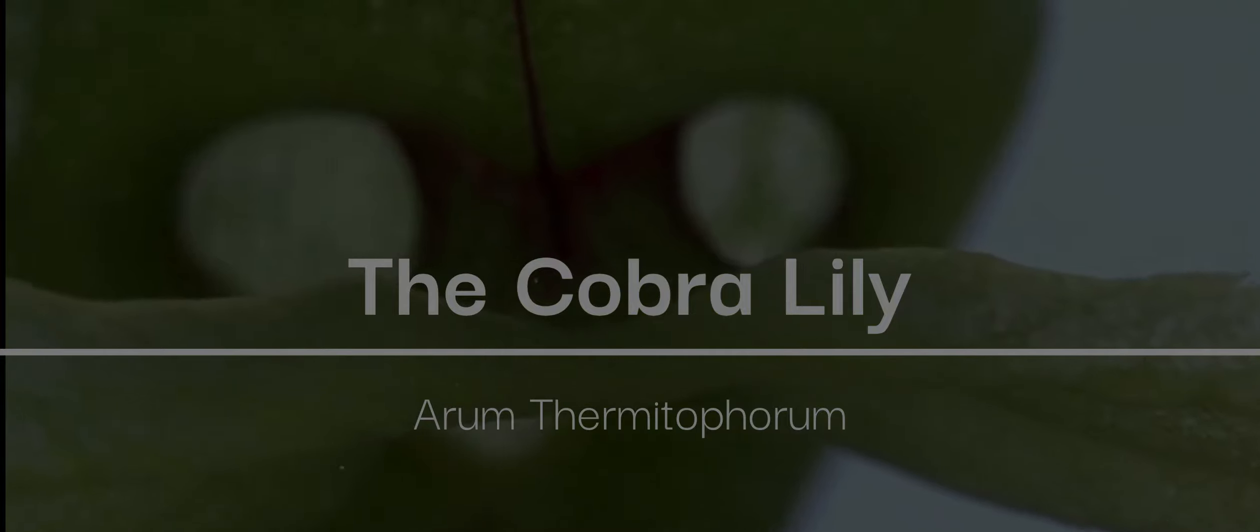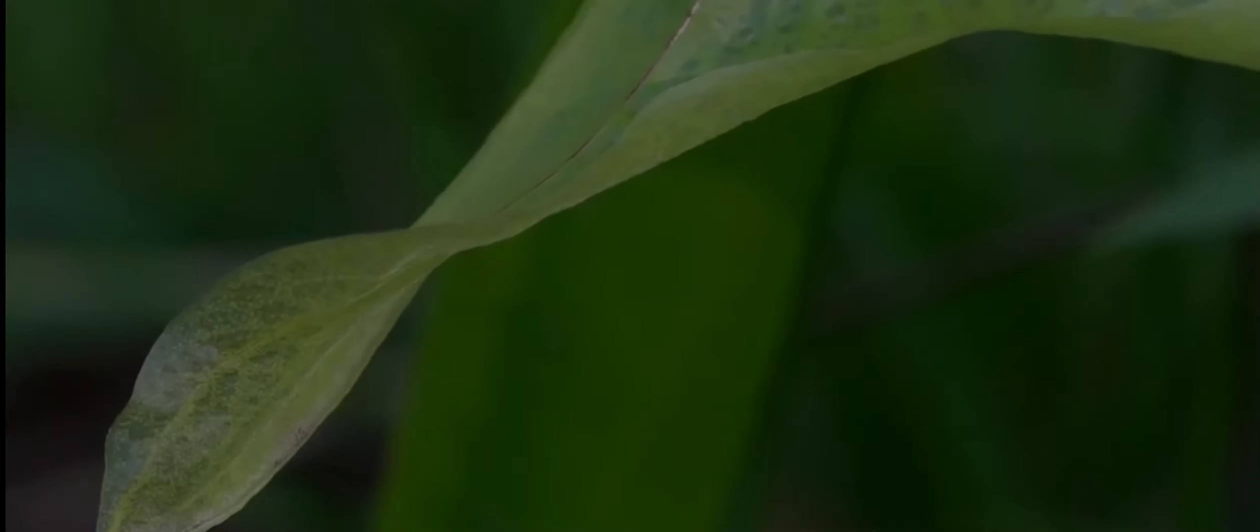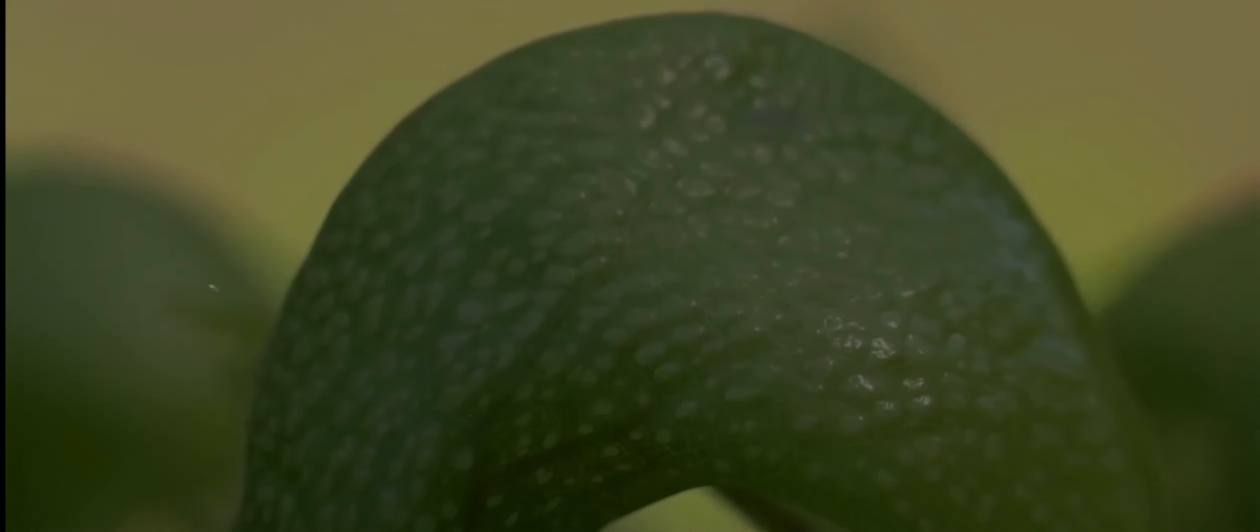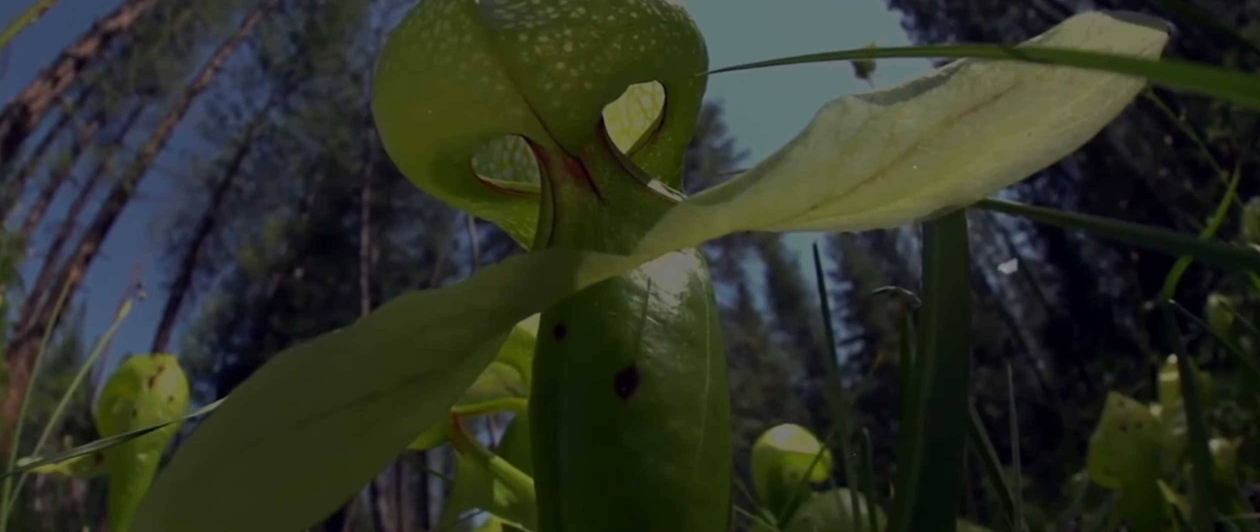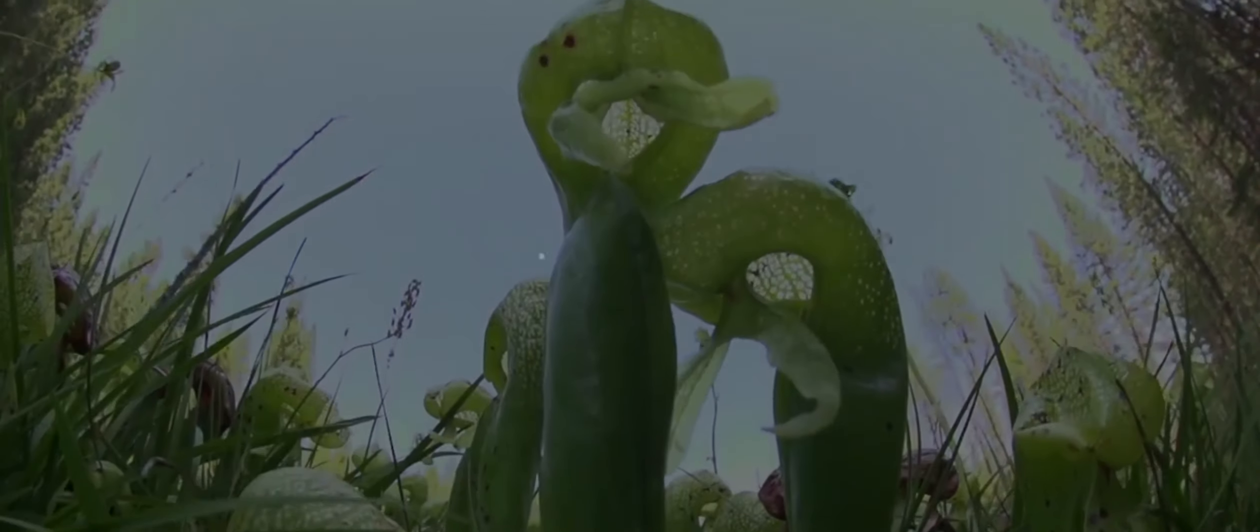9. The Cobra Lily, Arum thermitophorum. Living up to its name, the cobra lily resembles a hooded snake. It emits a foul odor that attracts prey, then traps them in its slippery depths.